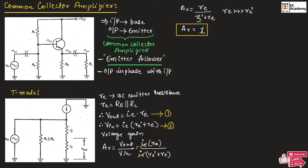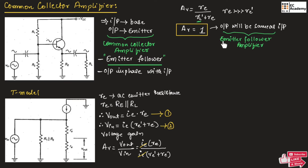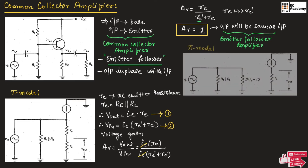Since gain is equal to 1, the output will be the same as input. So, in common collector amplifier, which is an emitter follower amplifier, the output will be same as input. Since the emitter follows the input, it is known as emitter follower amplifier.